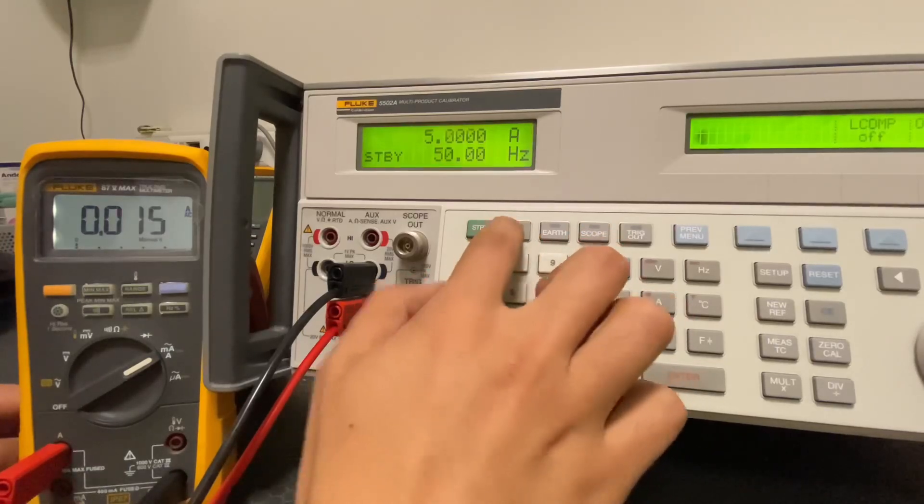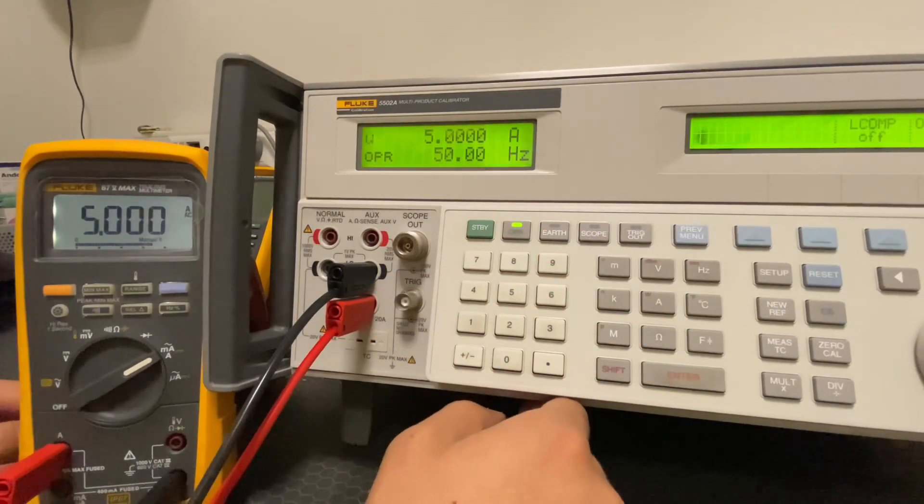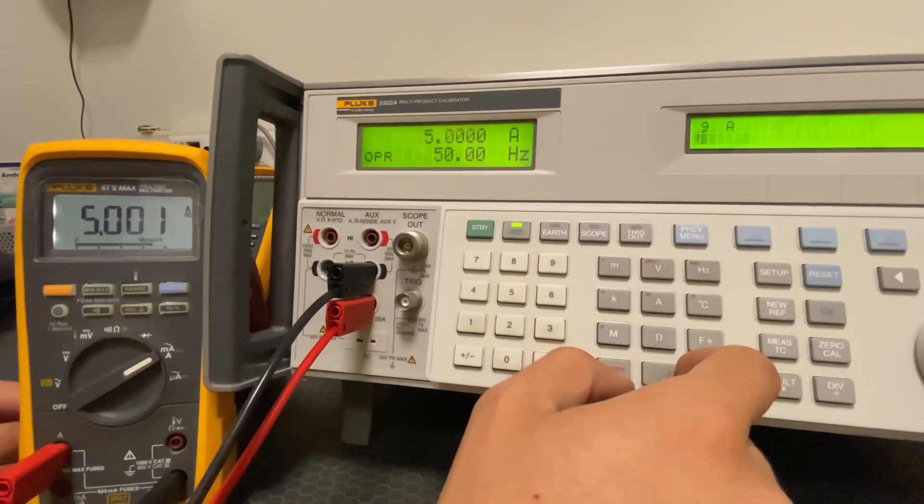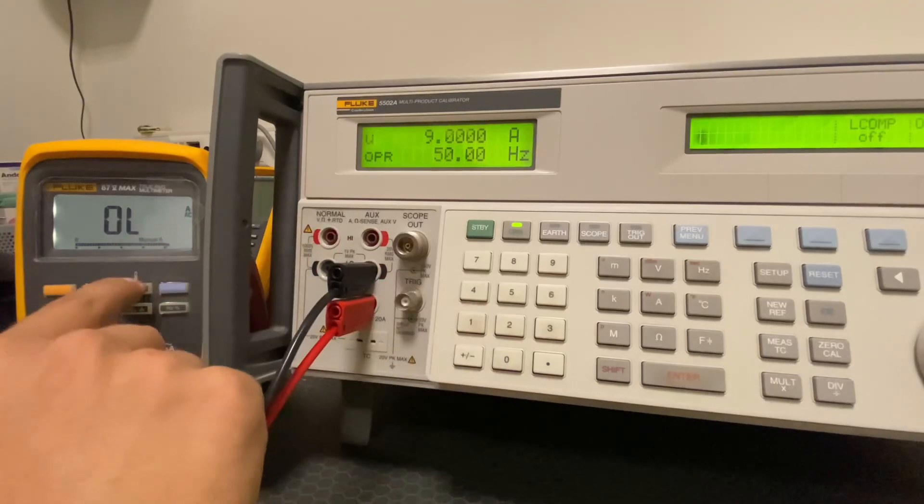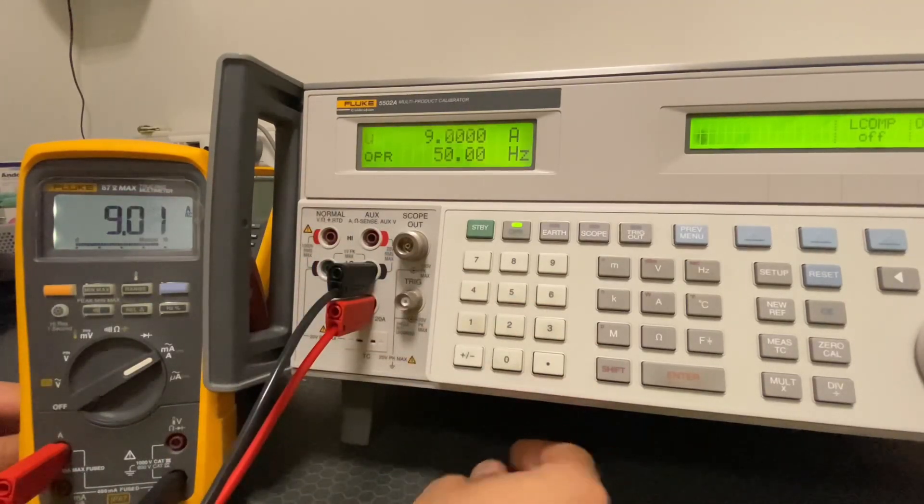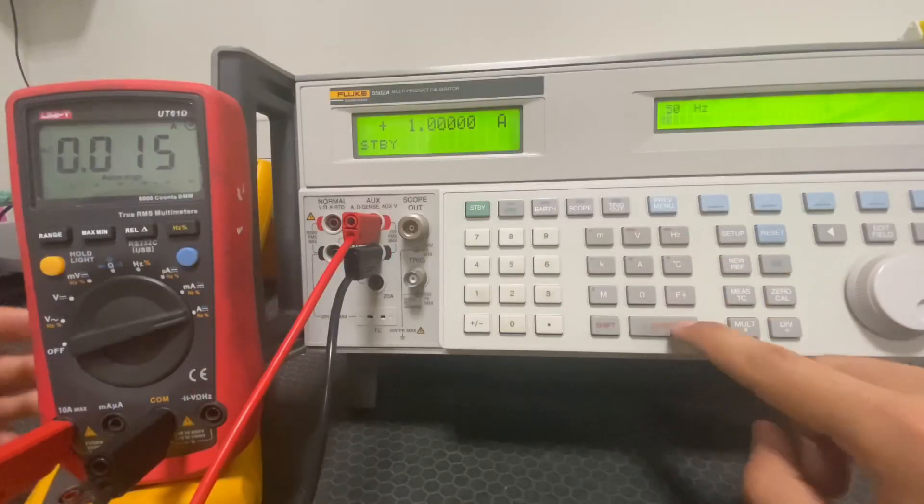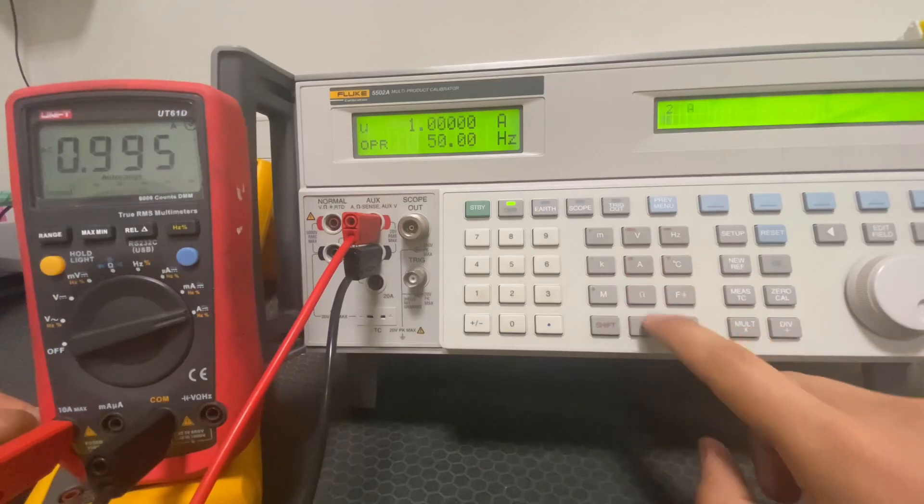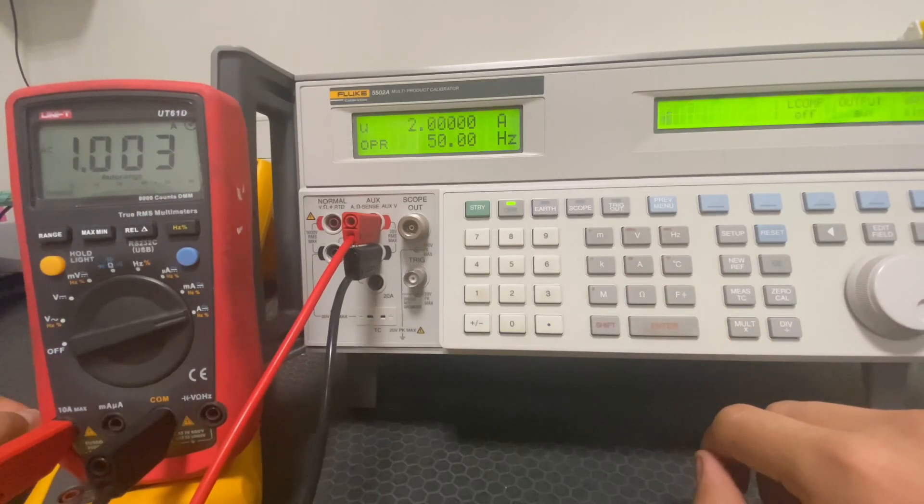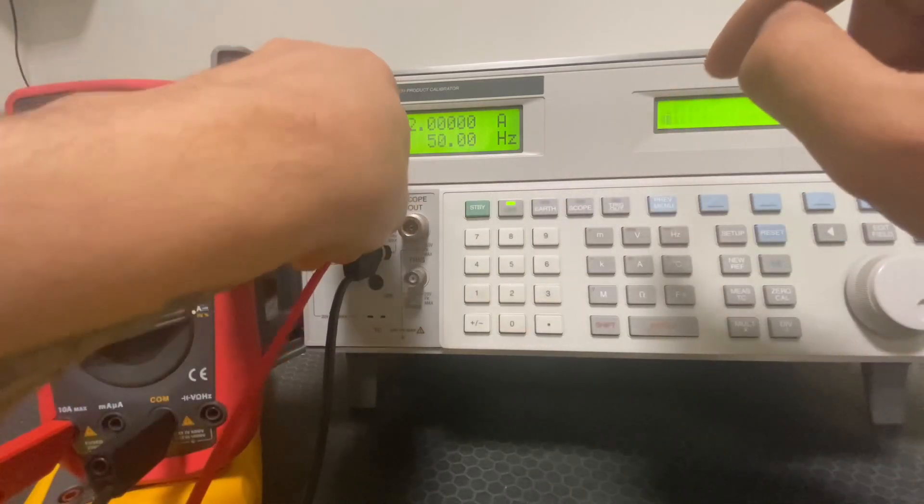The values on the Fluke multimeter appear to be quite stable. Finally, let's check 9 amps. It's giving a limit error. Let's increase the limit. We will perform the same measurements on the Unit's multimeter and complete the comparison video. We measured 1 amp, 2 amps, 5 amps, and 9 amps.